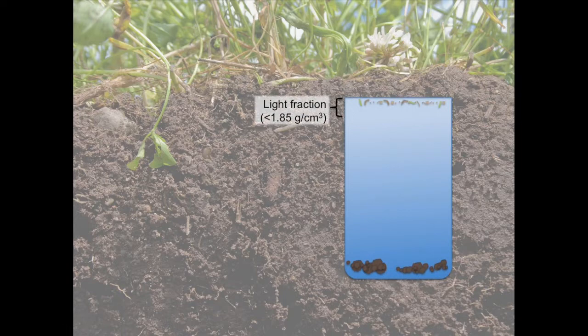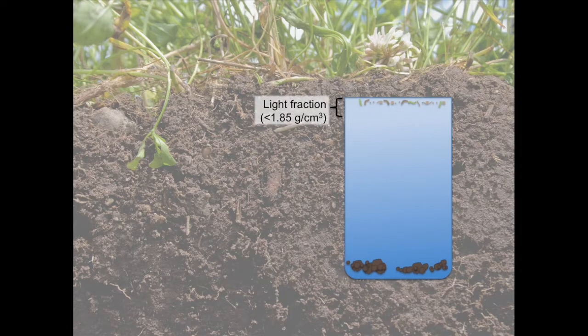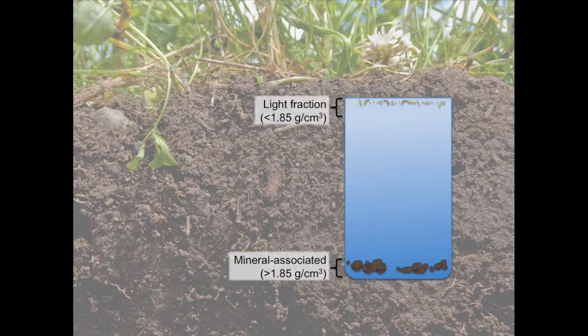Light fractions, with densities less than 1.8 grams per centimeter cubed, are predominantly undecomposed residues, whereas heavier fractions, more dense than 1.8 grams per centimeter cubed, are generally characteristic of mineral-associated organic matter, also known as organo-mineral complexes.